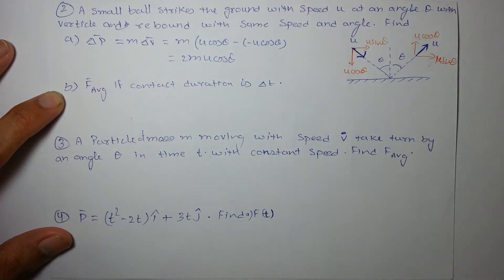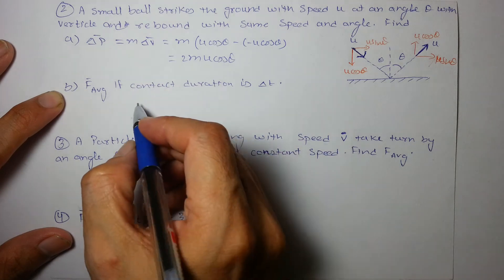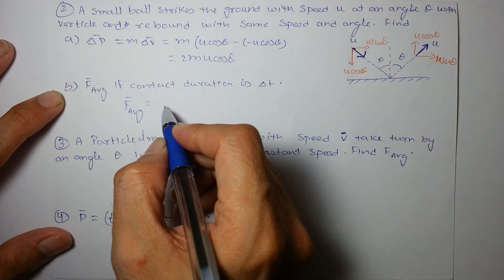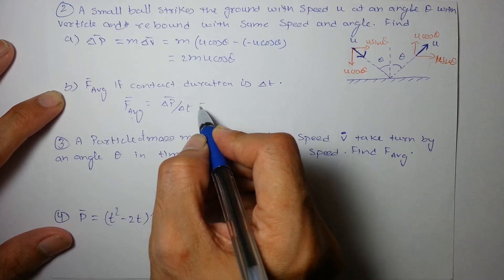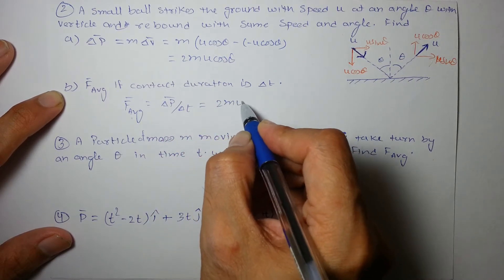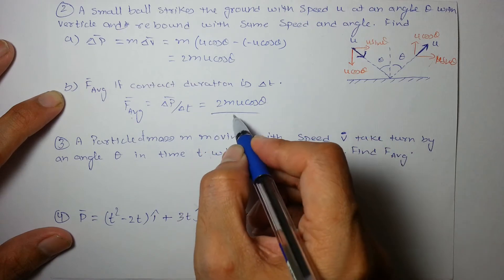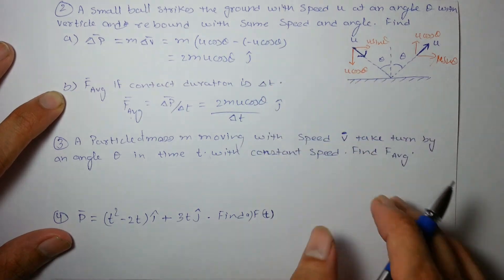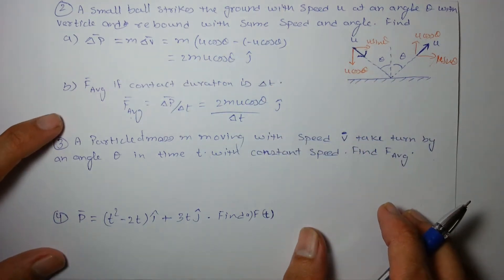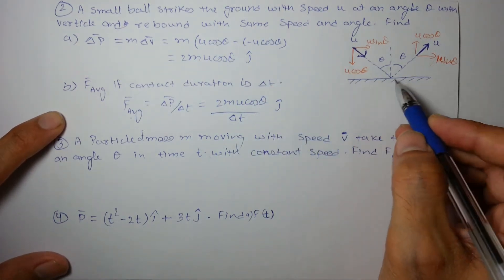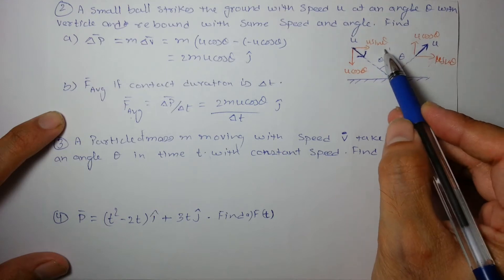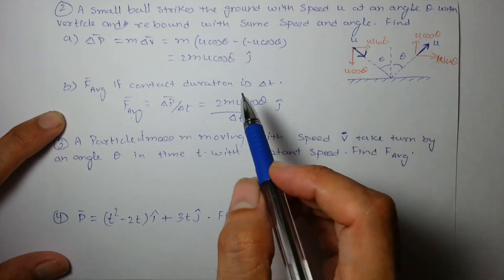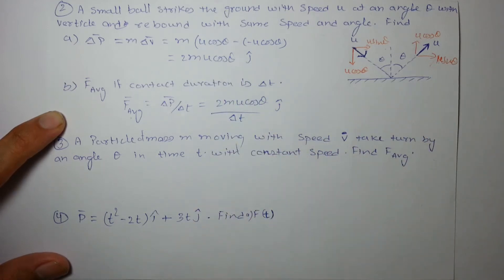Average force, if contact duration is Δt, is F_average = change in momentum / time = 2mu·cosθ / Δt, directed along ĵ (upward). There is no change in momentum along the x-axis since the horizontal velocity remains the same, but in the y-direction the velocity reverses, giving a change of 2 times the velocity component.